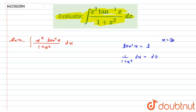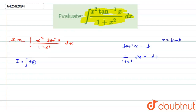Similarly, from the substitution, x equals tan of t. So the integral becomes: the integration of tan squared of t, multiplied by t, where dx divided by 1 plus x squared is replaced by dt.